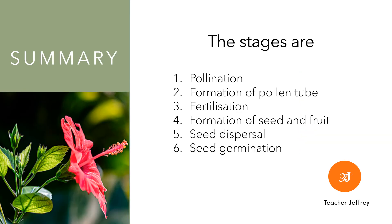For our summary, the stages in plant sexual reproduction are: 1. Pollination, 2. Formation of pollen tube, 3. Fertilization, 4. Formation of seed and fruit, 5. Seed dispersal, 6. Seed germination.